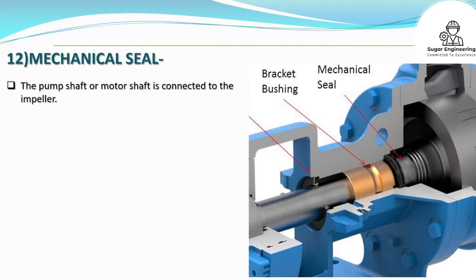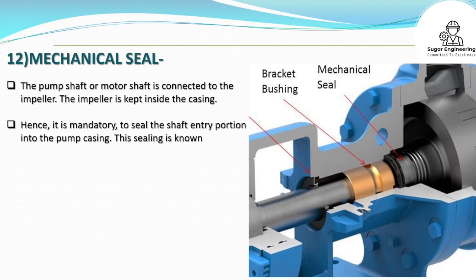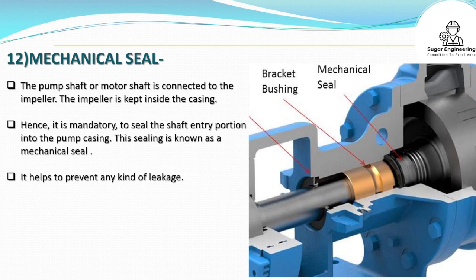Mechanical seal: The pump shaft or motor shaft is connected to the impeller, which is kept inside the casing. Therefore, it is mandatory to seal the shaft entry portion into the pump casing. This sealing is known as a mechanical seal, and it helps to prevent any kind of leakage.